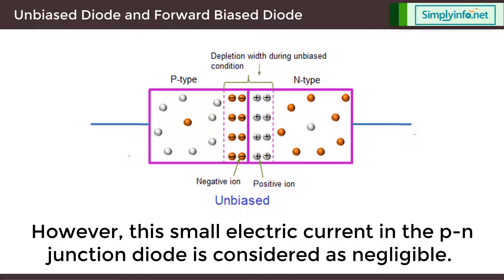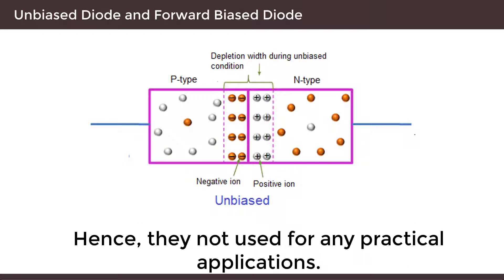However, this small electric current in the PN junction diode is considered as negligible, hence they are not used for any practical applications.